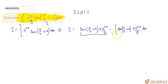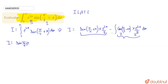We apply integration by parts again in the remaining part, keeping the trigonometric function as the first term and the exponential as the second term. So I becomes sin(π/4 + x) · e^(2x)/2, minus we extract the 1/2 outside the integration.